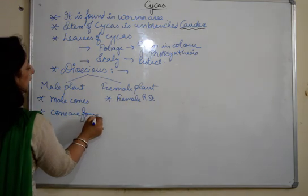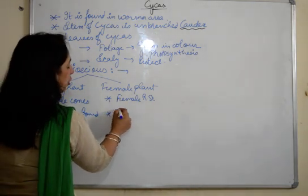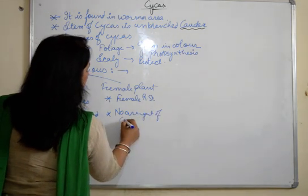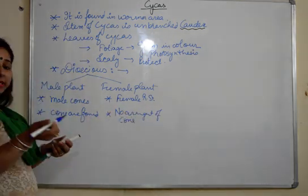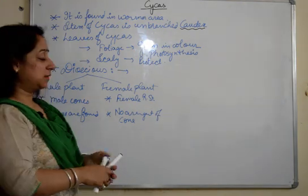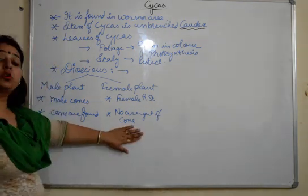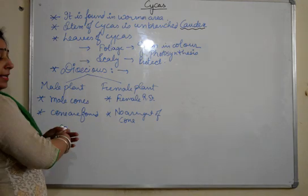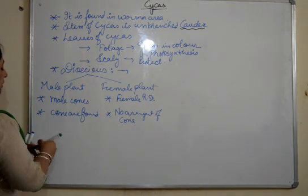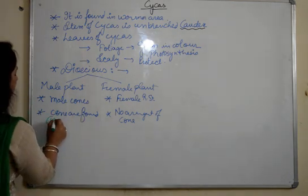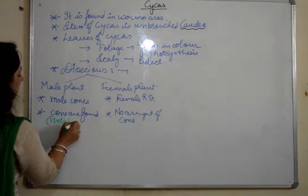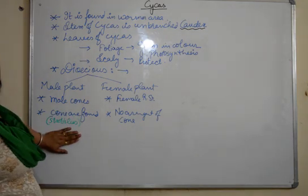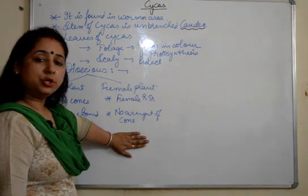In the case of females, there is no arrangement of cones. There are no cones, but there are general reproductive structures — they are not called cones. Whereas in males, there are male cones, and the cone is known as strobilus. So in males, strobilus is formed; in females, strobilus is not formed.